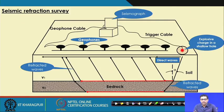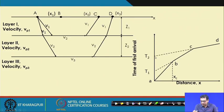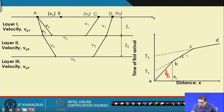In seismic refraction survey, we can determine the thickness and velocity of n number of layers. Using n number of geophones, we get a time-distance curve. The slope of the first segment gives 1/Vp1, the slope of the next gives 1/Vp2, and the following gives 1/Vp3.